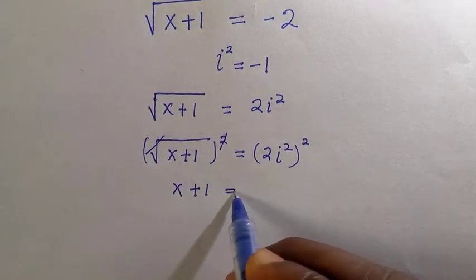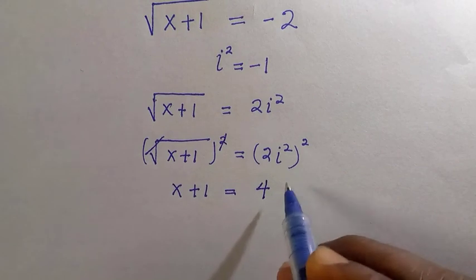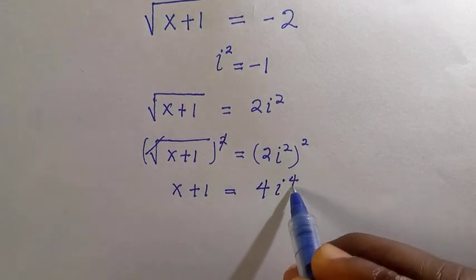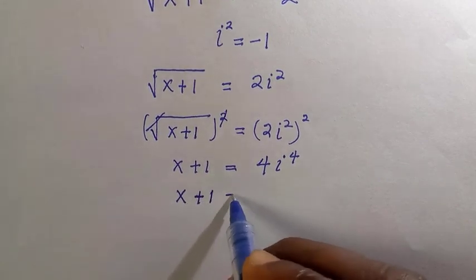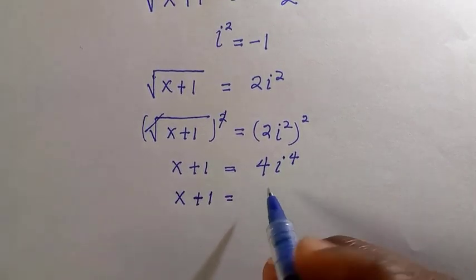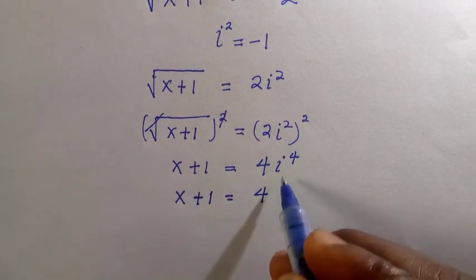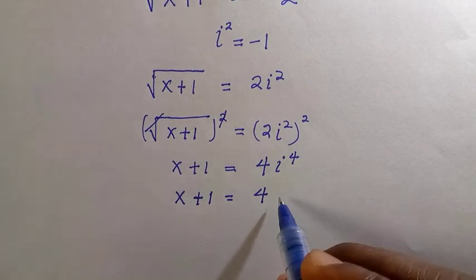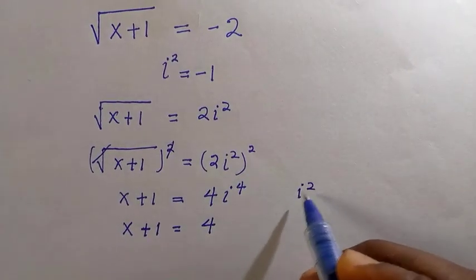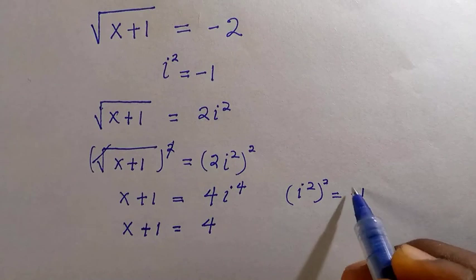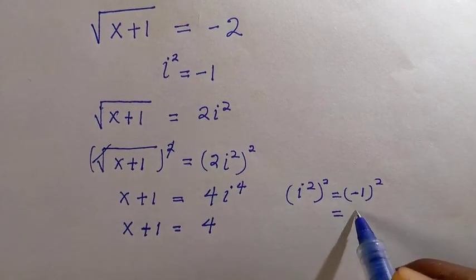Then here is x plus one equals four. The reason is we have this i raised to the power of four. It can be broken down into i² raised to the power of two, and where everything is minus one raised to the power of two, which equals to one. And one multiplying four is still four.